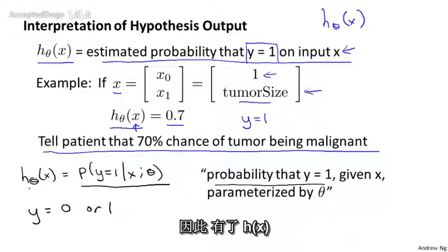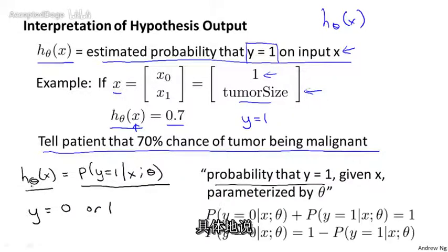So given h of x, we can therefore compute the probability that y is equal to 0 as well. Concretely, because y must be either 0 or 1, we know that the probability of y equals 0 plus the probability of y equals 1 must add up to 1.